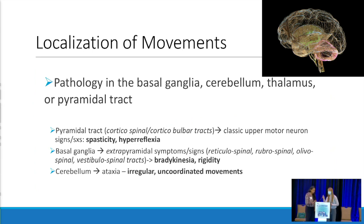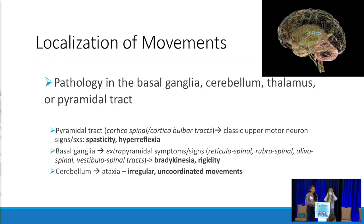When we talk about movement disorders, we try to talk about localization — where does this come from? For the most part, the pathology is in the basal ganglia, the deep nuclei within the brain. You can also have difficulty with the cerebellum, the back part of the brain, the thalamus — that internal relay station — or the pyramidal tracts, which bring the signal from the brain all the way down to the muscles.